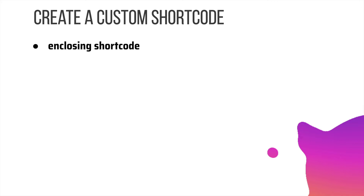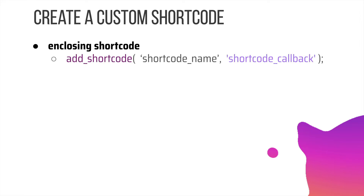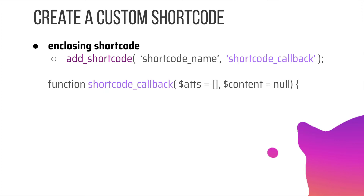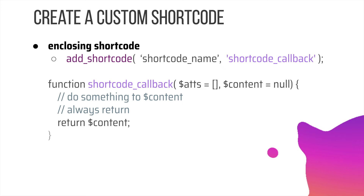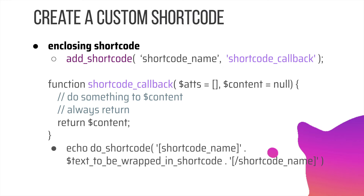For an enclosing shortcode, same thing — use the add_shortcode function, but this time it will also take content, do something to that content, and then return it. For echoing it out, you use the same function but put the content inside it and use a closing tag for the shortcode. If you're using it inside the Gutenberg editor, you don't really need the do_shortcode function — you can simply use the square brackets with the shortcode name and pass attributes if needed. The do_shortcode function is only needed when using it inside a PHP template programmatically.